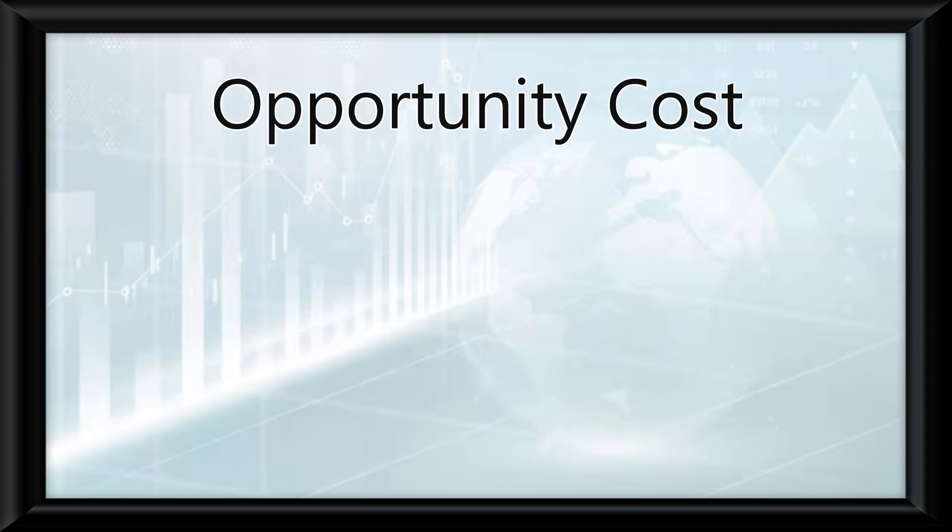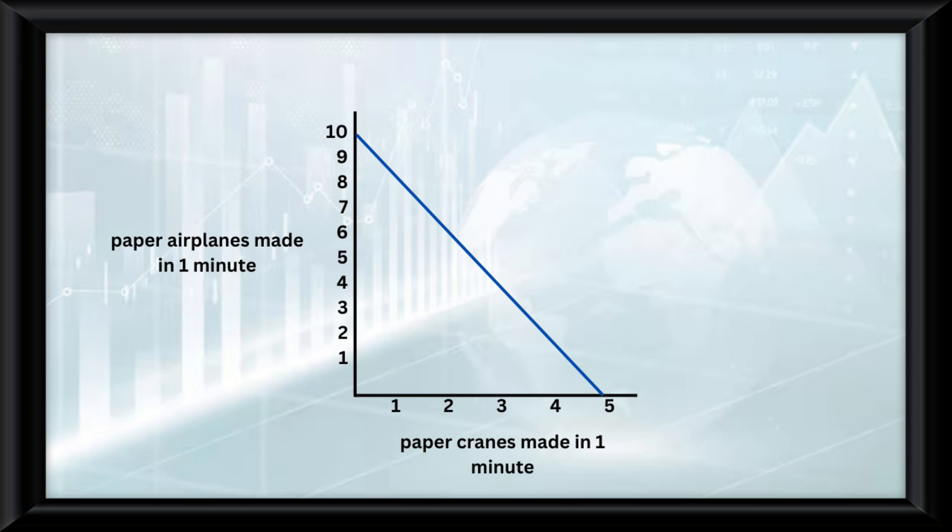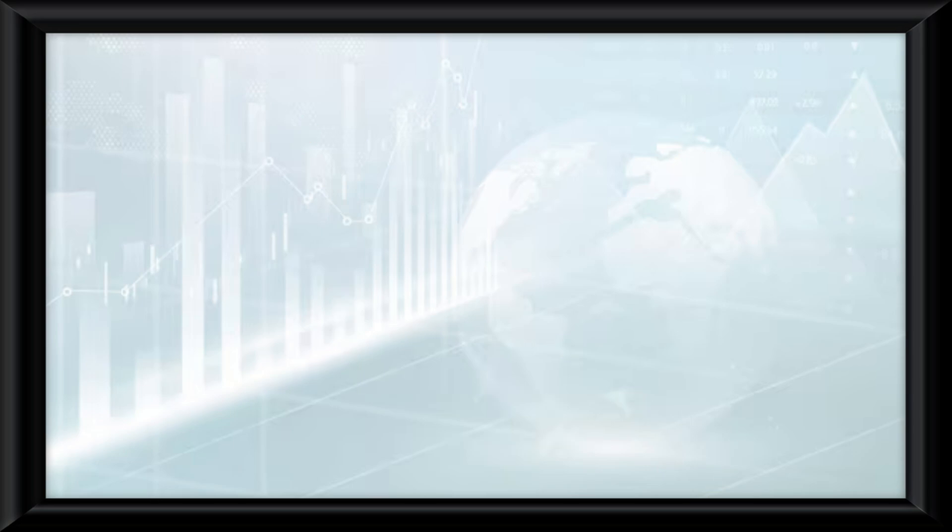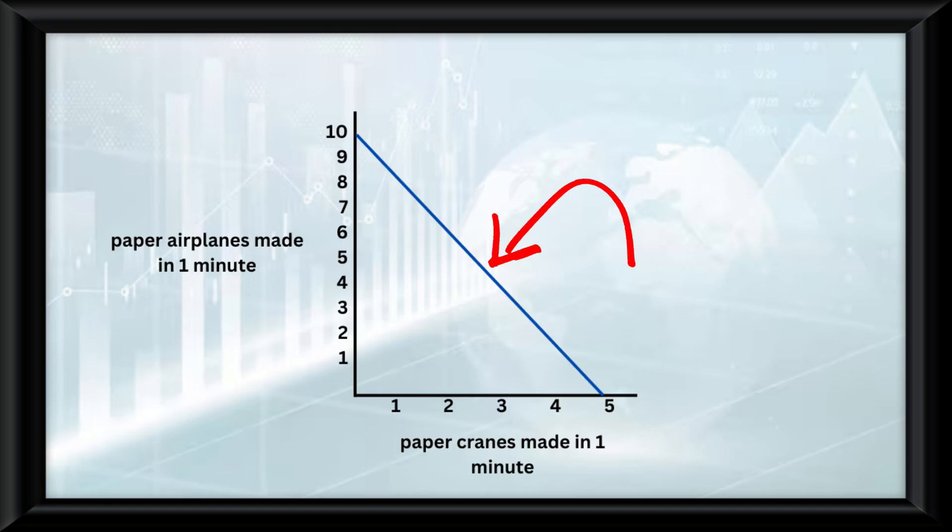This leads into the idea of opportunity cost. Opportunity cost simply means what you sacrifice. I sacrifice the ability to make 10 paper airplanes if I decide to produce 5 paper cranes, therefore making 10 paper airplanes my opportunity cost. The thing is though, perfect straight lines like this one aren't all that common and only happen when opportunity costs are constant.